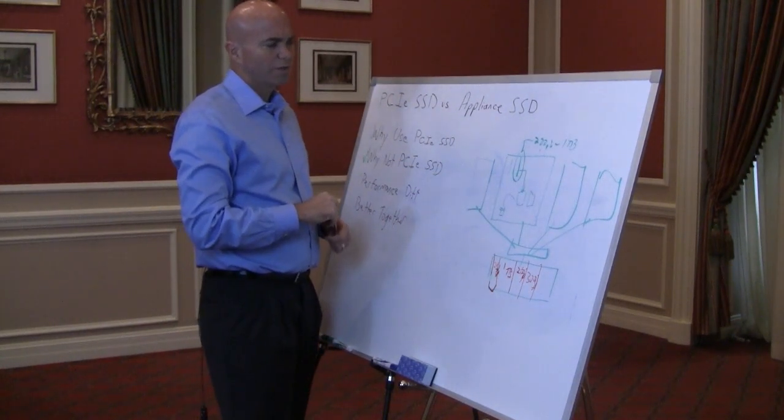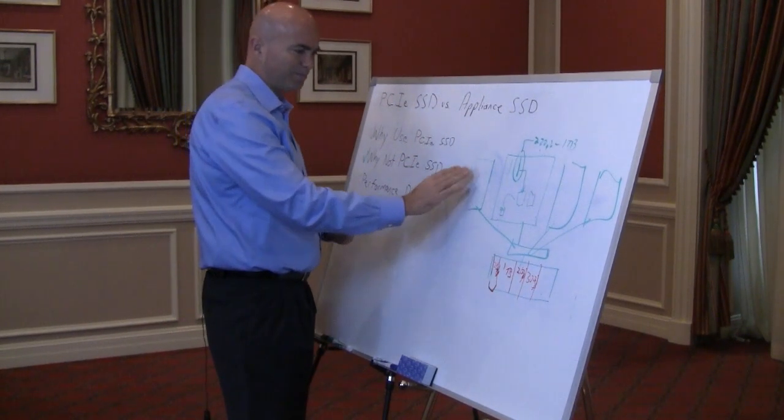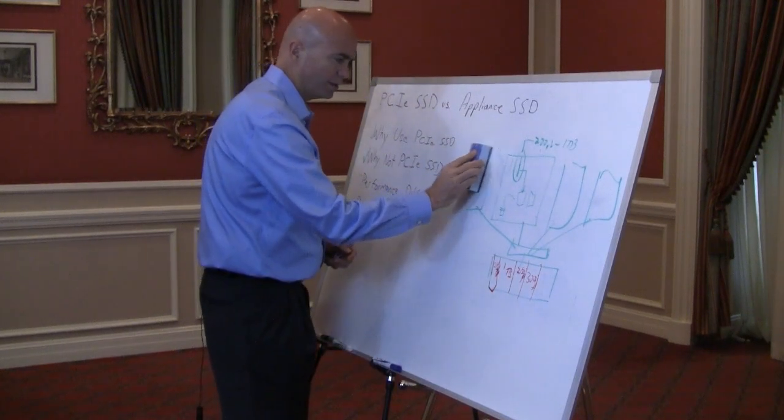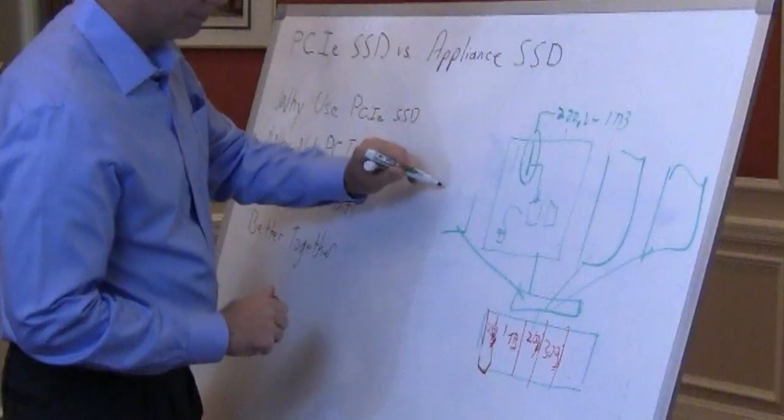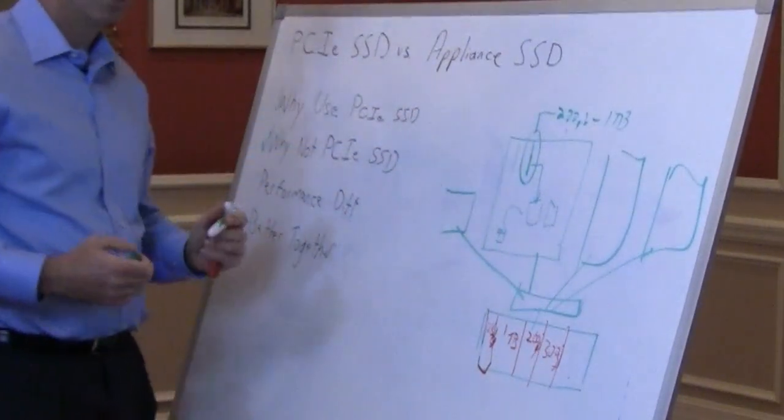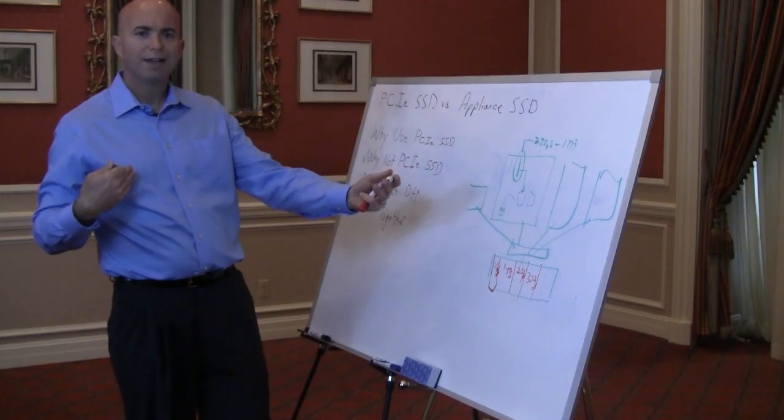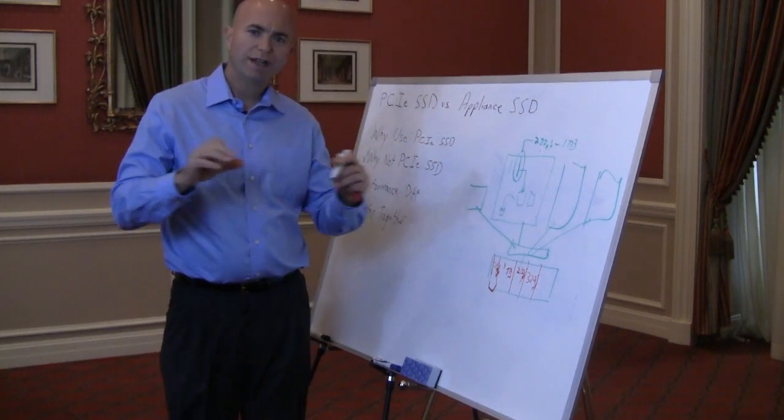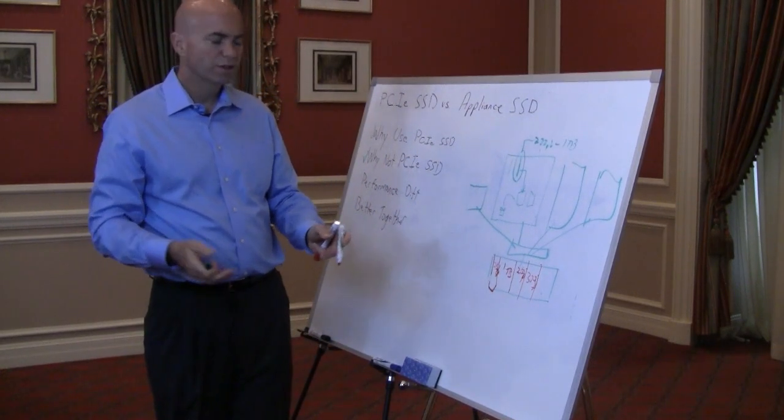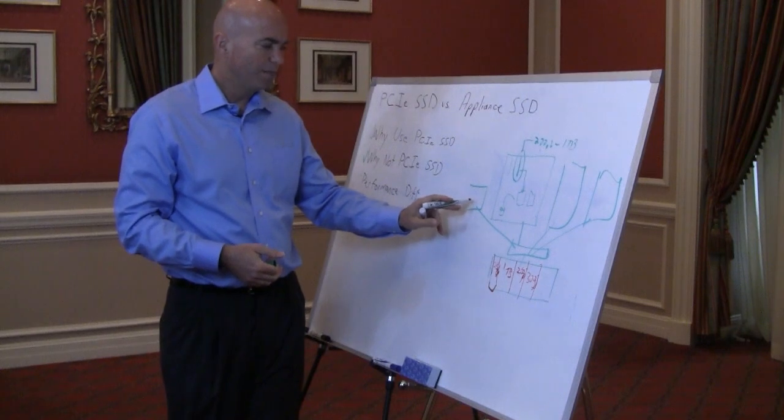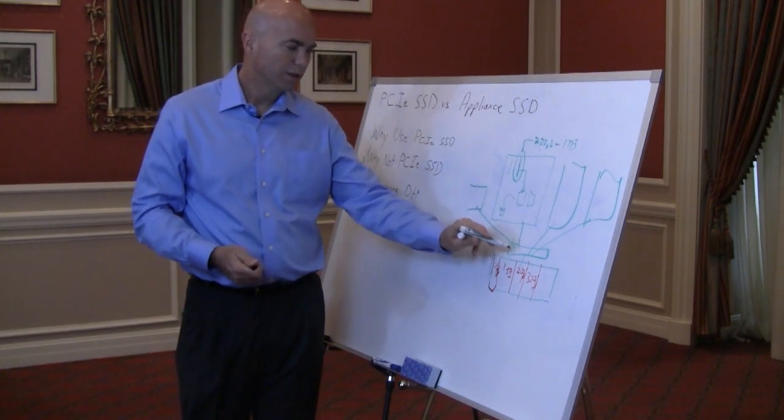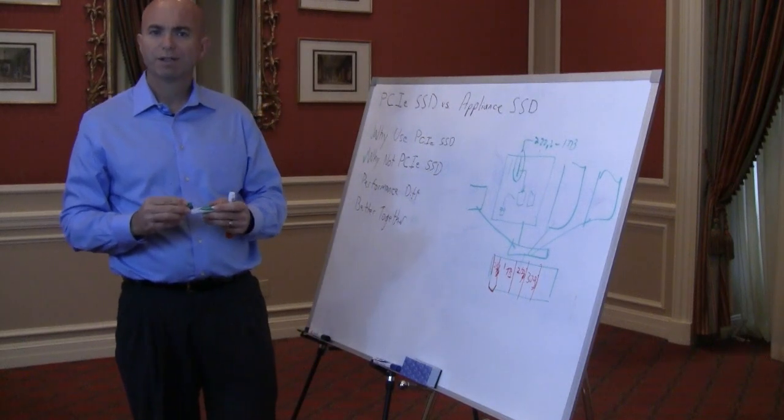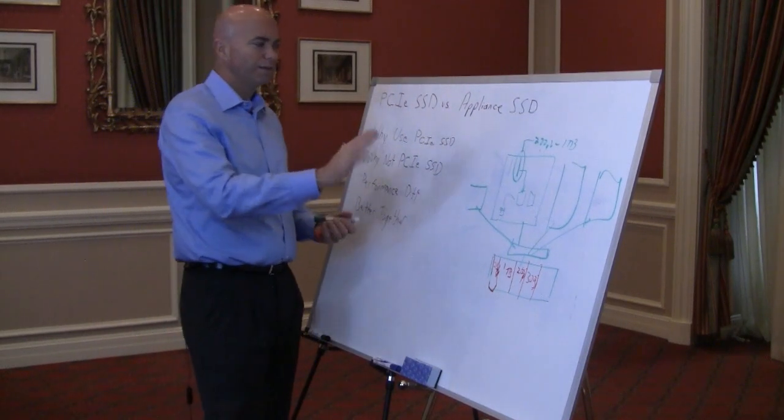The other disadvantage to PCIe SSD is going to be size. So let's say this is a very small server. Many of the PCIe SSD slots are full size, full height, and won't fit in the more denser 1U, 2U servers. So in this case, it might make more sense to be able to access it off of a shared network that might be fiber channel or something like that. So those are really the key differences.